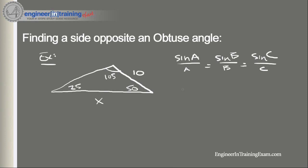So let's say we got sine of 25, which is the opposite of our known side of 10, divided by 10 is equal to sine of 105, which is opposite our unknown X. And once again, just rearranging that, we got X is equal to 10 sine of 105 divided by sine of 25.